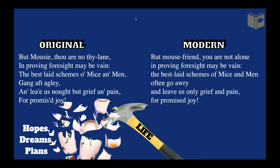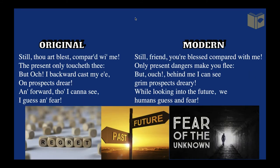For example: if you have a test tomorrow and study all night, but none of the questions are about what you studied, you'll feel grief and pain for wasted time and promised joy. In the last stanza, compared to the speaker, the mouse is 'blest' — the mouse only focuses on present dangers, whereas humans think about past regrets and an uncertain future, living in fear.